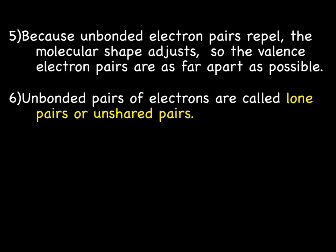Because unbonded, or unshared, electron pairs repel, because they're negatives, and negatives don't really like other negatives, the molecular shape adjusts so that the valence electron pairs are as far apart from each other as possible. Unbonded pairs of electrons are called lone pairs or unshared pairs. And in many ways, the unbonded pairs have the biggest influence on the shape of a molecule because of the electron repulsion.